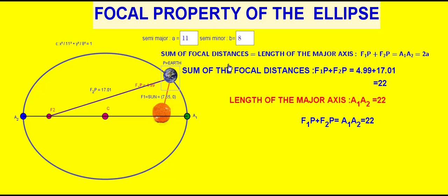The sum of the focal distance of any point on the ellipse is equal to the length of the major axis. That is, f1p plus f2p equal to a1a2 equal to 2a.